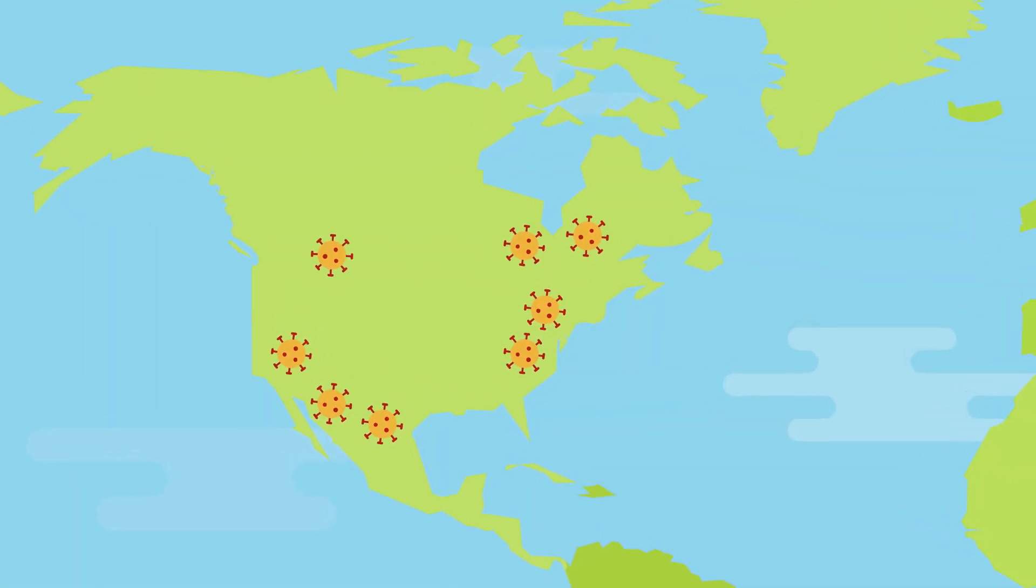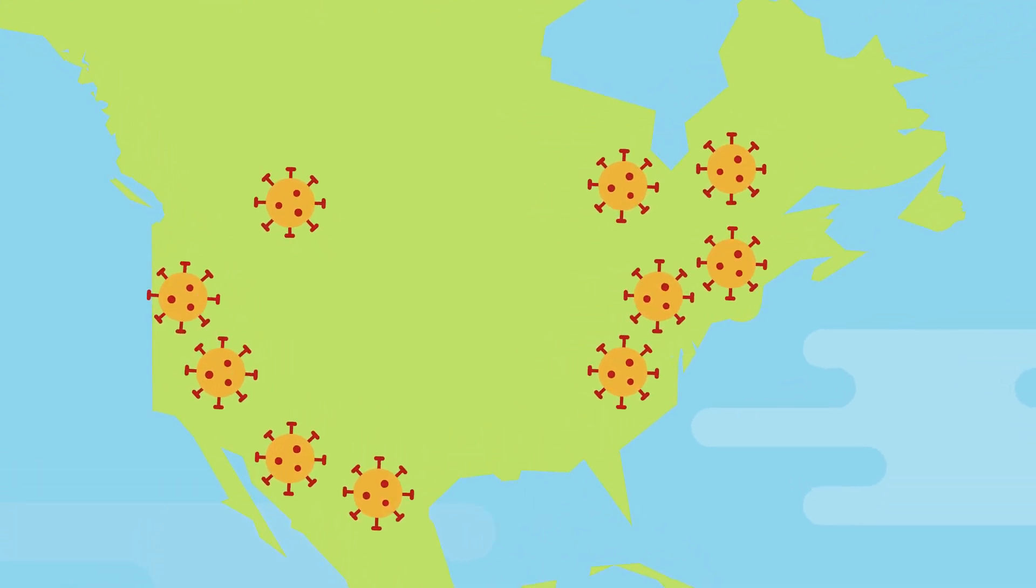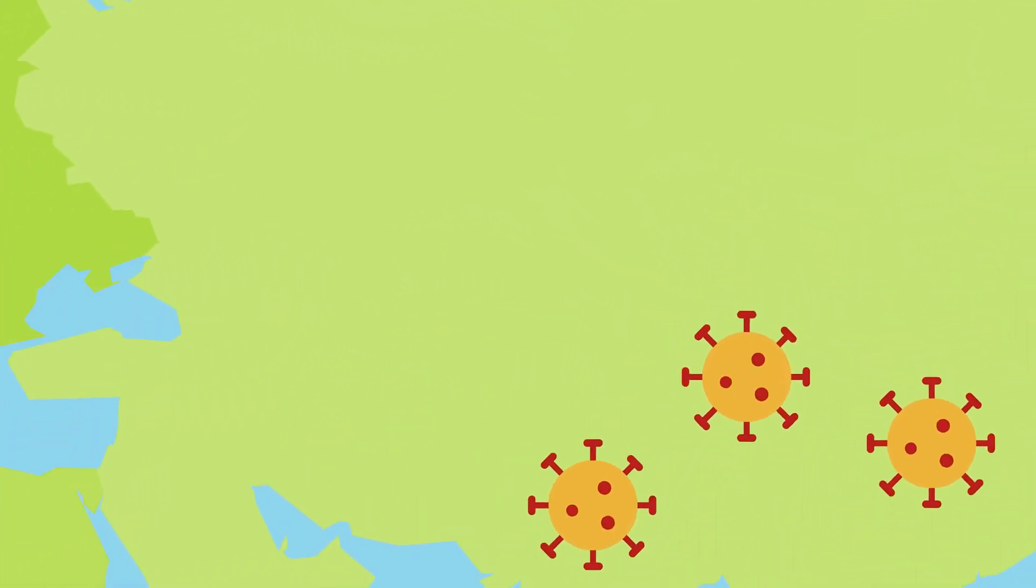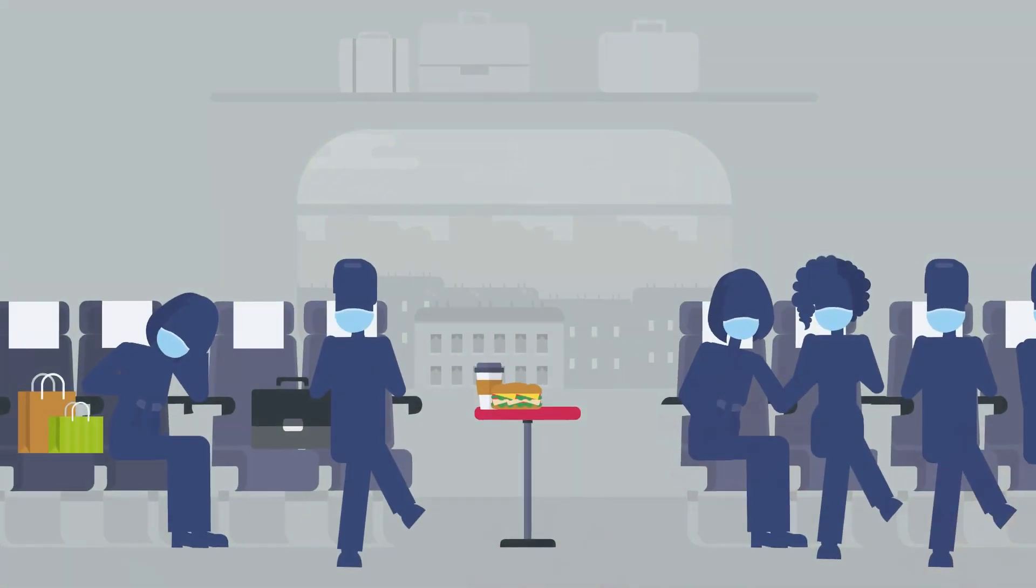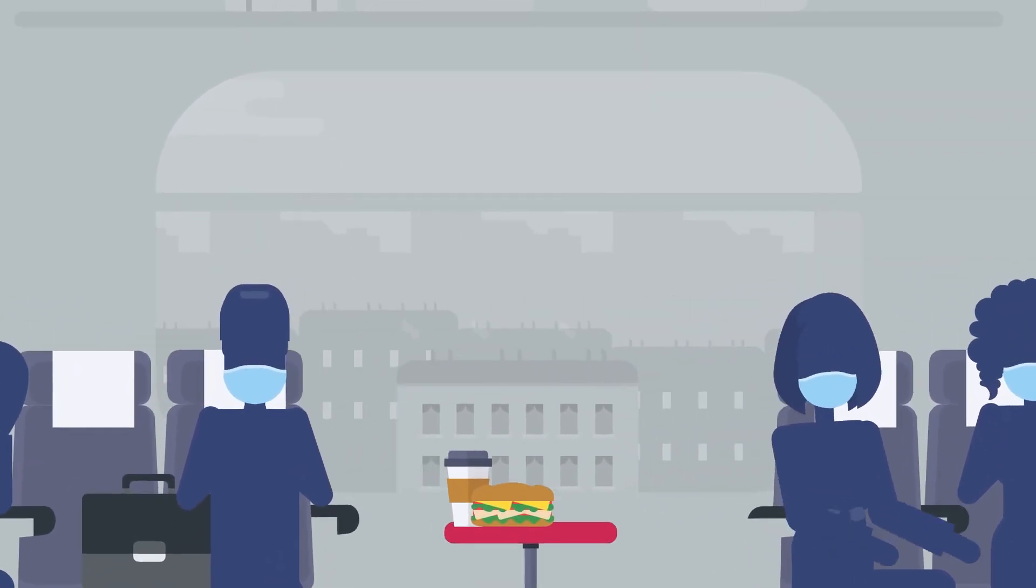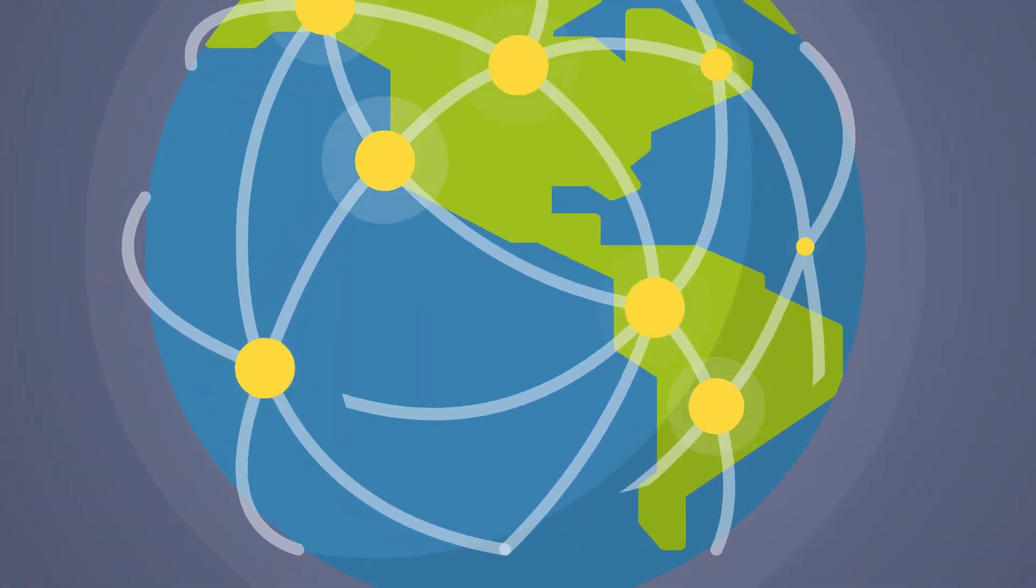Another study found that the growth rate of coronavirus slowed down after masks were introduced as compulsory in 15 US states. And finally, a study that examined coronavirus deaths in 198 countries found that cultural norms and government policies favoring mask wearing had lower death rates. So there's a lot of real-time evidence that demonstrates the utility of masks.